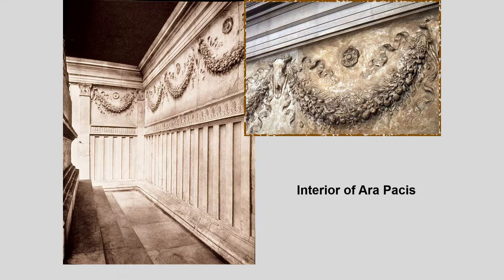The interior of the Ara Pacis was rather plain. The relief sculpture inside is actually quite different — it is a low relief, or bas-relief. We see images of laurel wreaths, fruits, and other symbols of fertility, fecundity, and provision. We also see cow skulls — bucrania — because bulls were among the animals sacrificed to the gods and were likely sacrificed here. But also we can't get away from this symbol of power — the symbol of masculine power — which by this point in ancient Rome had been established for thousands of years.